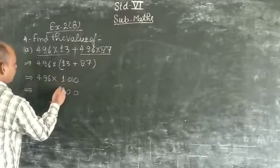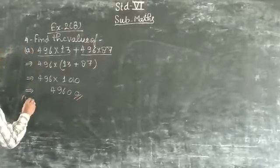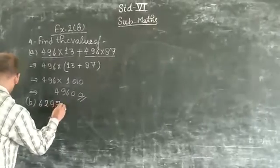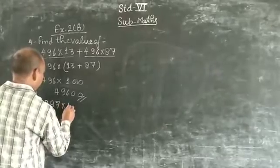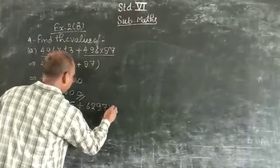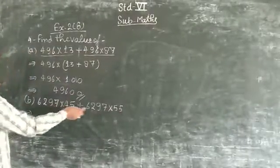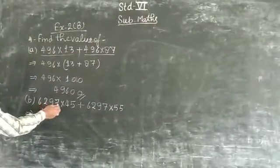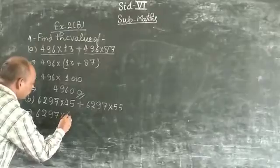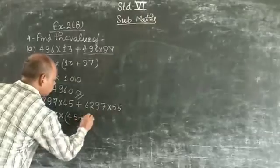Part B: 6297 × 45 + 6297 × 55. Here, 6297 is common. This 6297 multiplied by the remaining numbers, 45 plus 55.